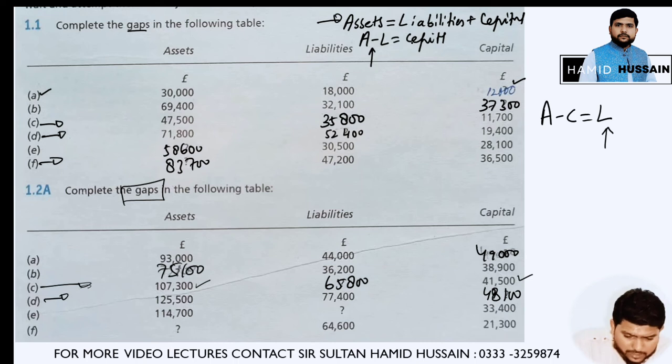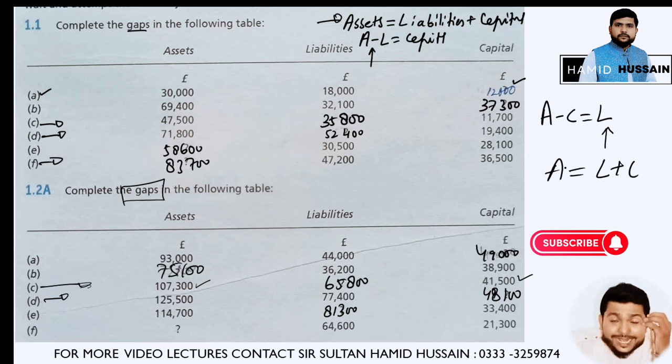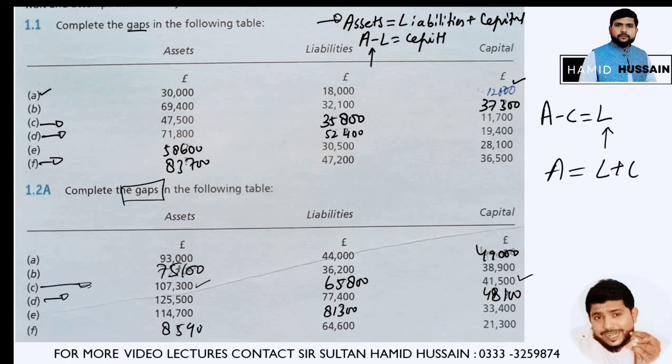In the last part, liabilities are given as 64,600 and capital is 21,300. You need to find out assets, so you add liabilities plus capital: 64,600 plus 21,300 gives you 85,900.